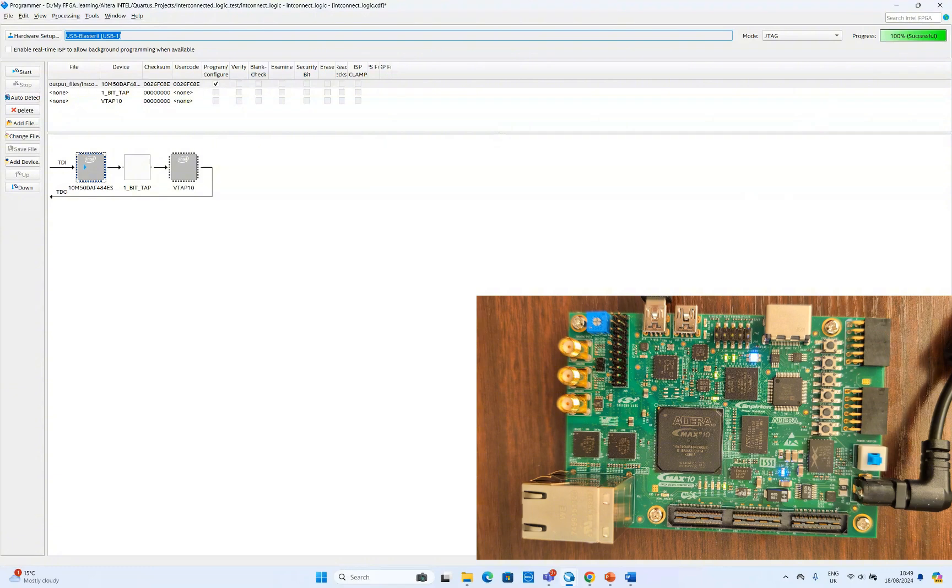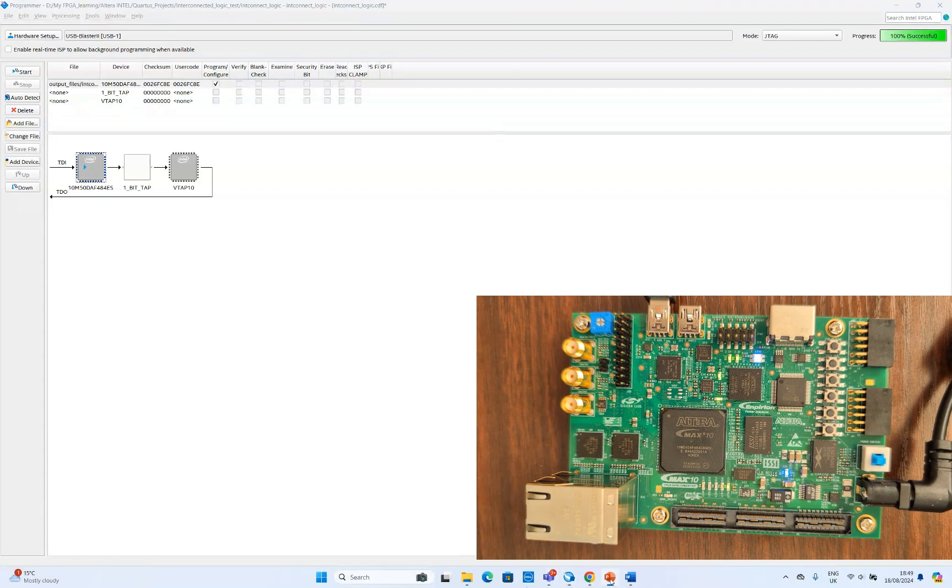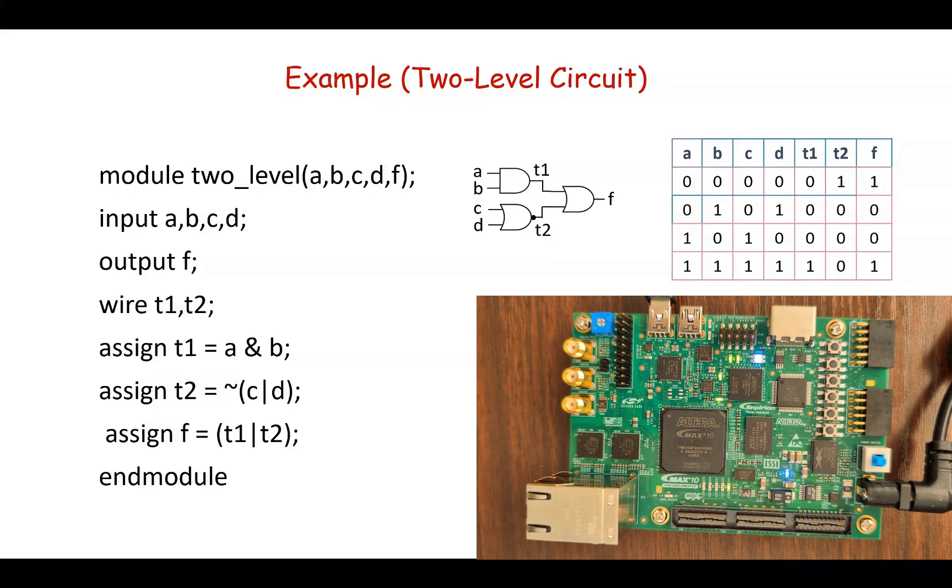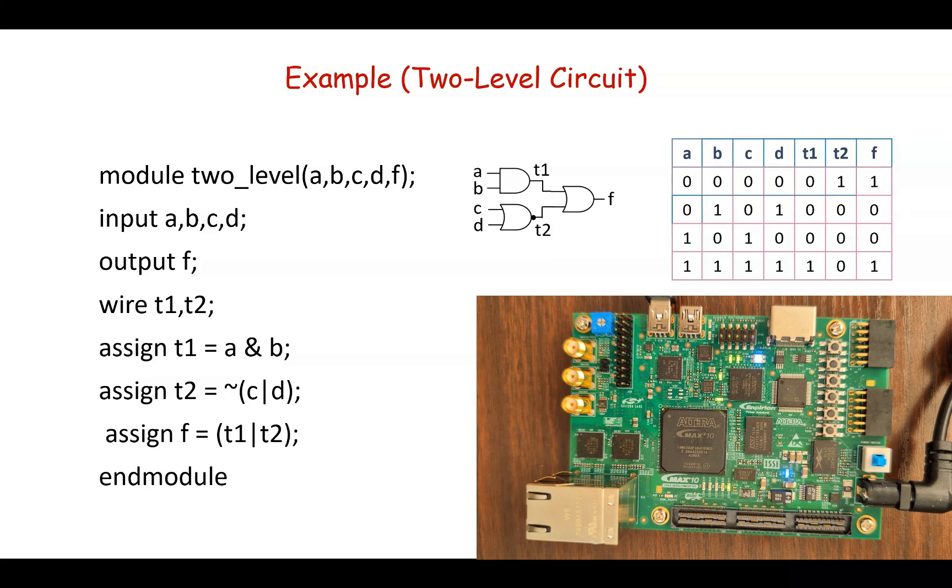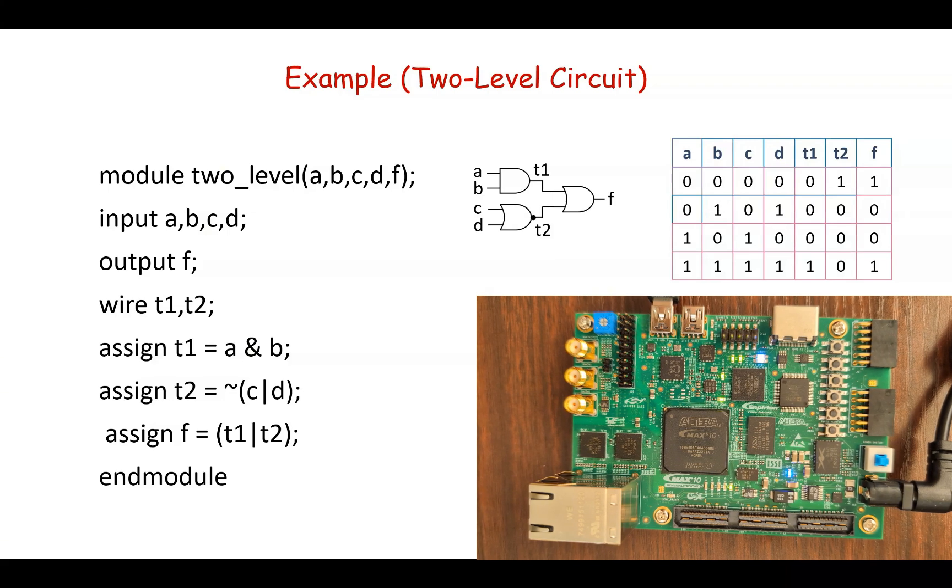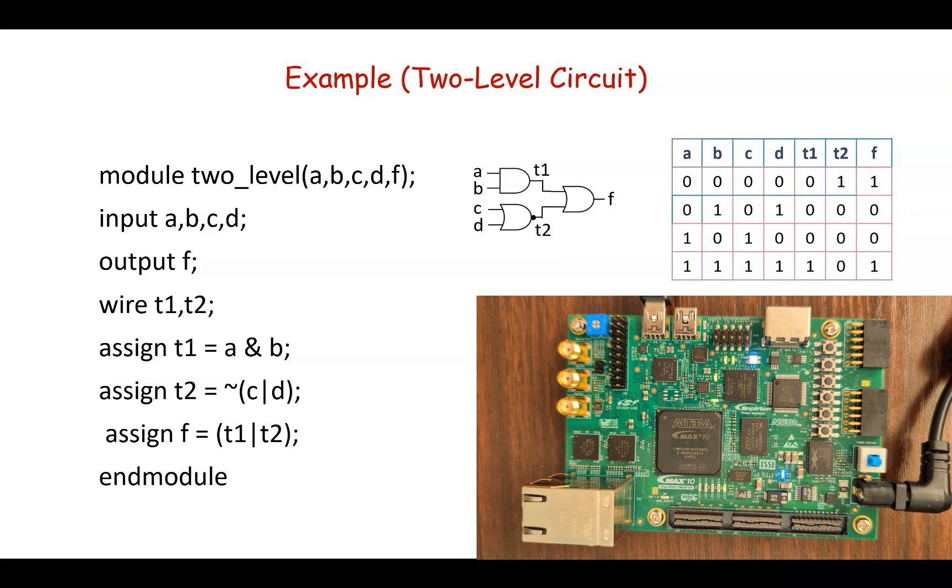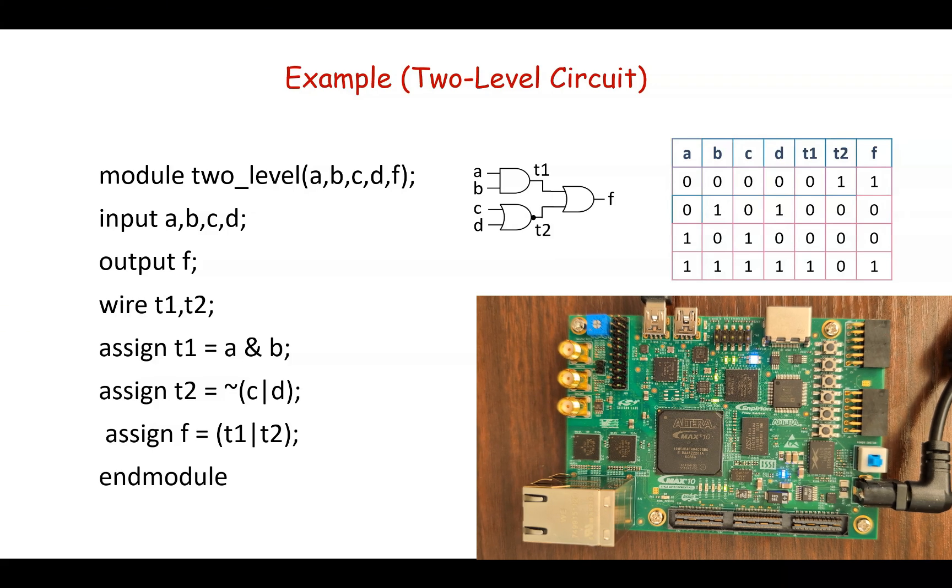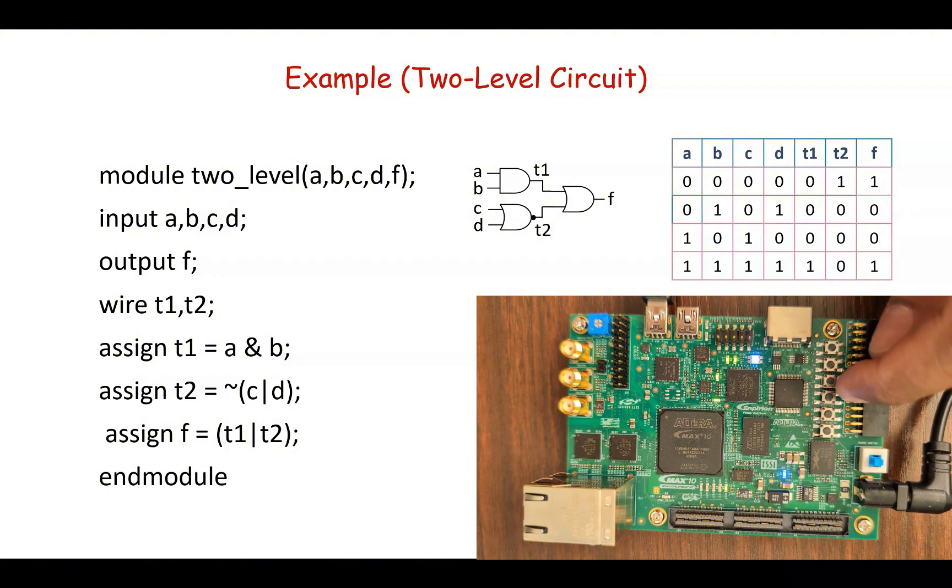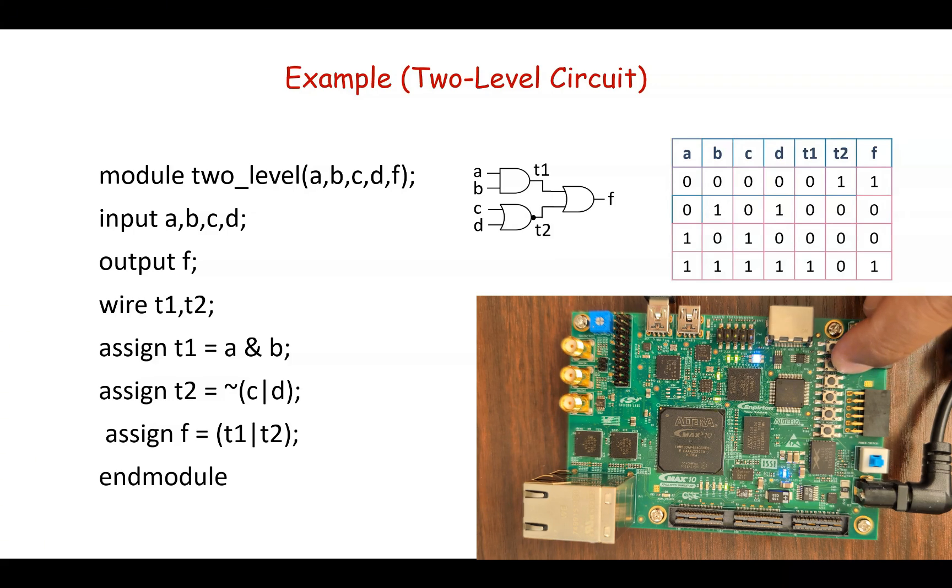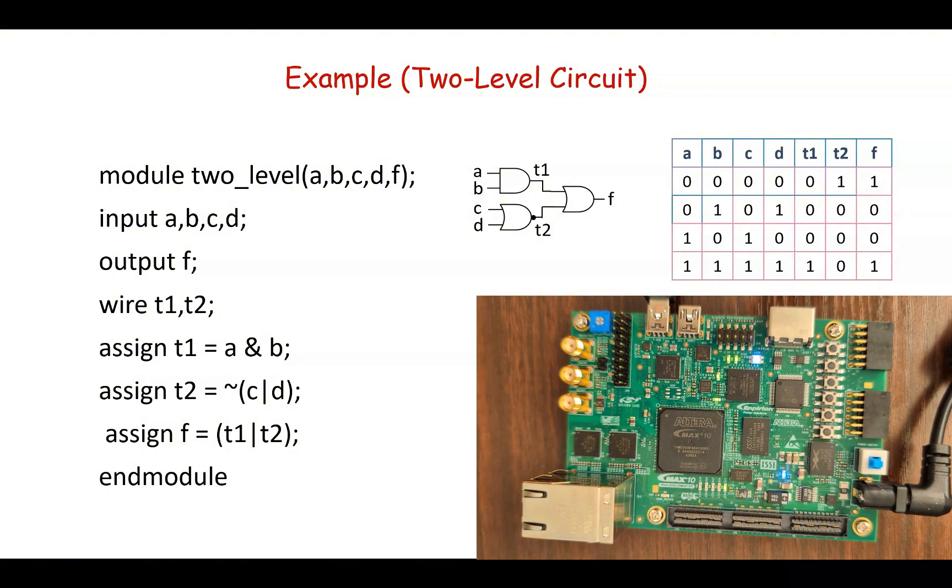So we'll check the logic in the Max 10 development board and we'll compare it with the brief truth table. So here you can again see the Verilog code for the two-level logic. You can also see the schematic which is implemented in the Max 10 development kit, and you can also see the brief truth table. So we will now verify this brief truth table with the hardware. So here in the Max 10 development kit, these push button switches are used as input. So this is a, this is b, this is c, and this button is d. And you can see this LED which is now on is our output f.